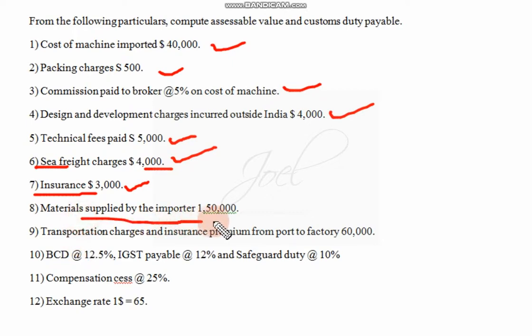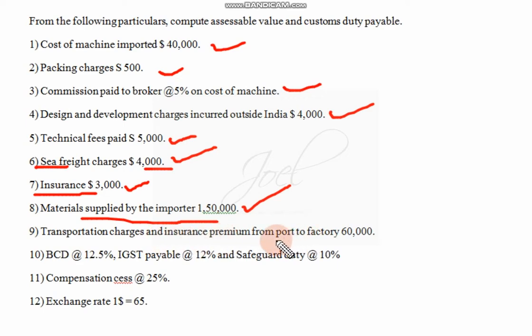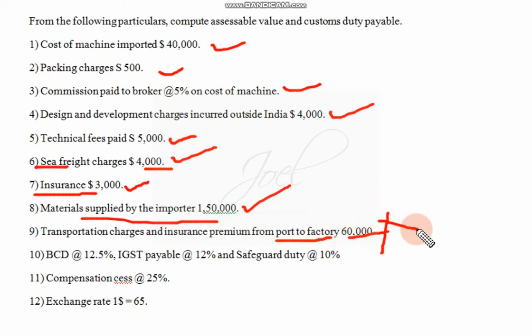Material supplied by importer — 1,50,000 is given. The importer has supplied it and it is used in the product, so we are adding this to the assessable value. Transportation charges and insurance premium from port to factory means from the Indian port to his workplace — whatever expenses are incurred for this purpose won't be considered at all. This 60,000 we are not going to consider because it is incurred in India.